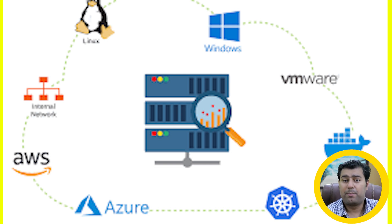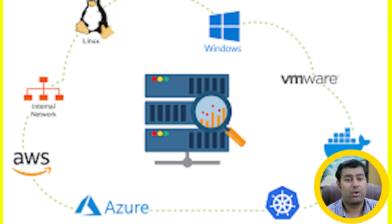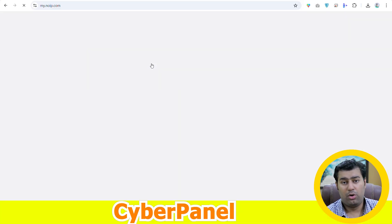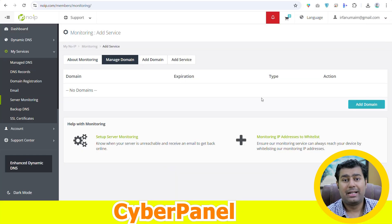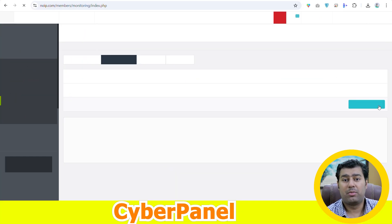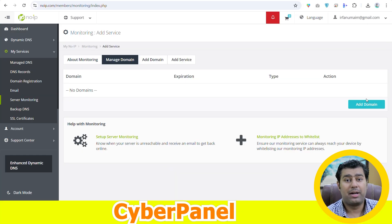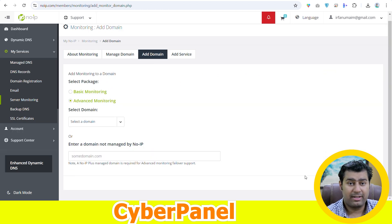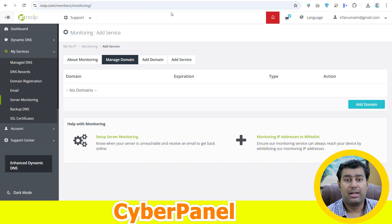Setting up server monitoring tools involves several steps to ensure accurate data collection and effective monitoring. Here is how you set up server monitoring tools: login to noip.com, click on the server monitoring tab under My Services, click Action, then configure next to your domain.